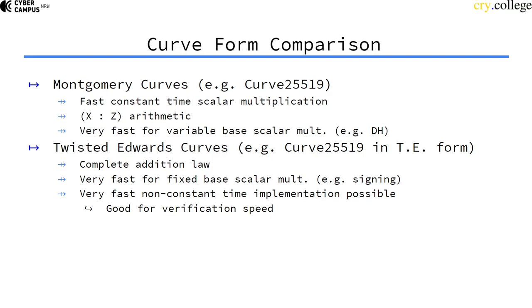Montgomery curves have very fast constant time scalar multiplication using the Montgomery ladder. They can use exact arithmetic very efficiently with the Montgomery ladder and curve equations, and they're very fast for variable base scalar multiplication.